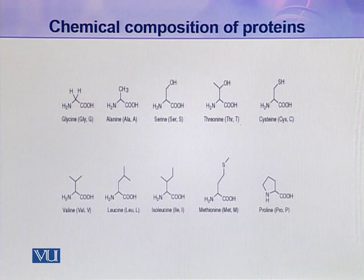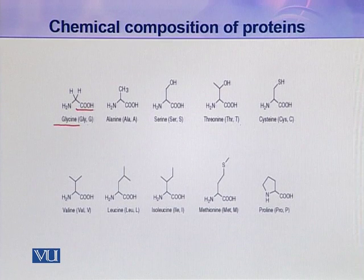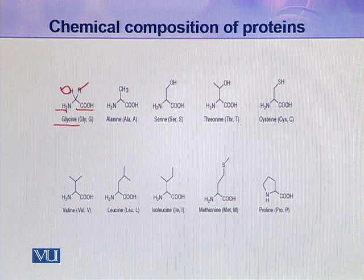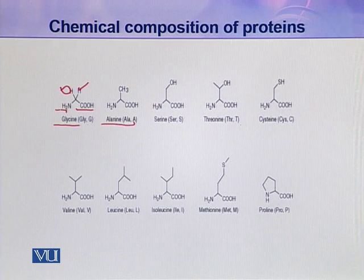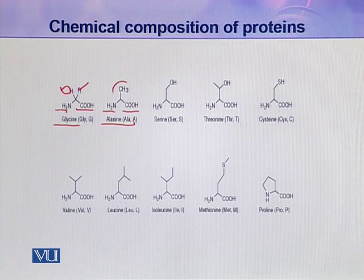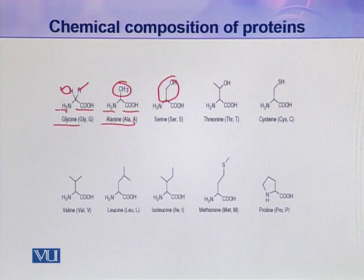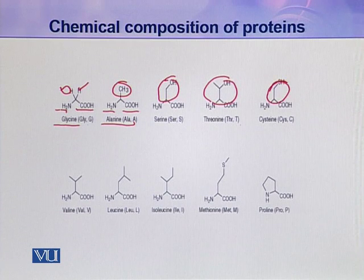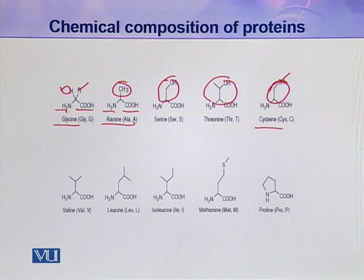Here you can see the structures of different amino acids. For example, glycine has one carboxylic group, one amino group, one hydrogen, and its R group is also hydrogen — making it the simplest amino acid. Alanine has a methyl R group, another simple amino acid. Then there is serine with its own R group, followed by threonine, which is a little bigger. Cysteine contains sulfur in its R group, making it a sulfur-containing amino acid.